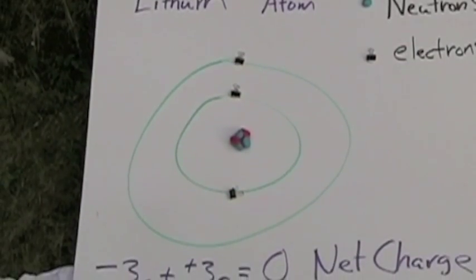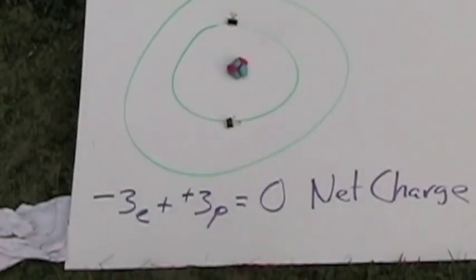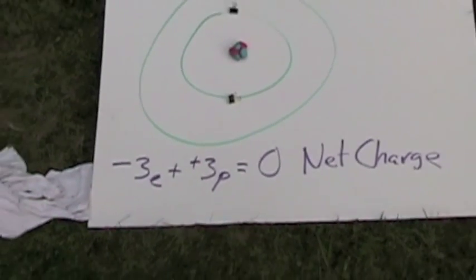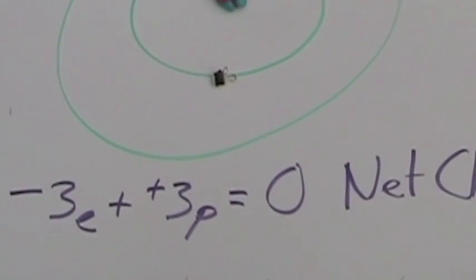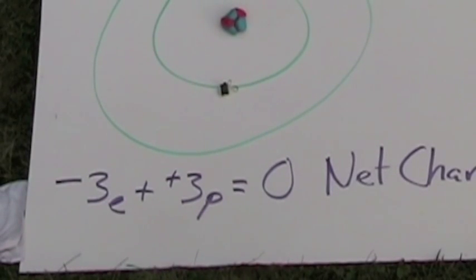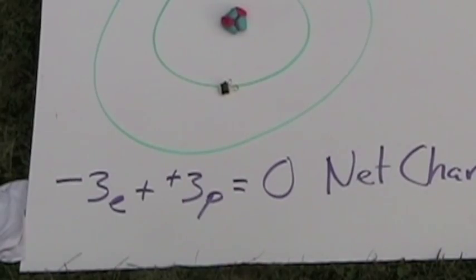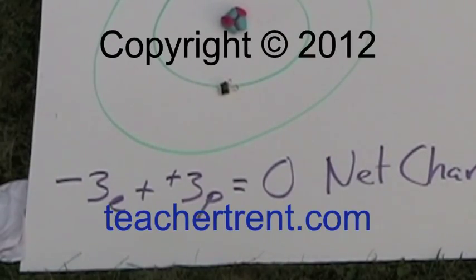Our formula, you can see it right there. The formula, very important. Negative 3e plus positive 3p equals a zero net charge. And that's the way I would like for you to start to think in these sort of terms. I do want the signs on there, the negatives and the positives.